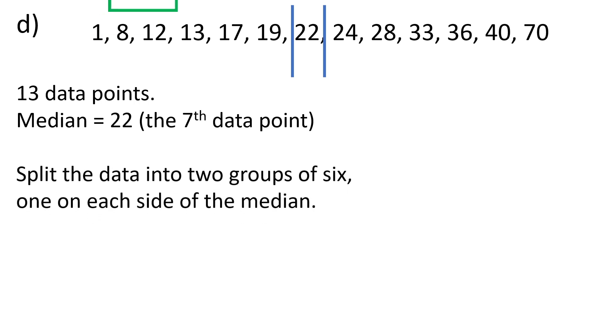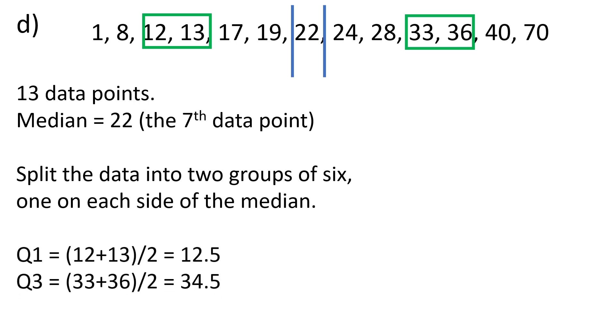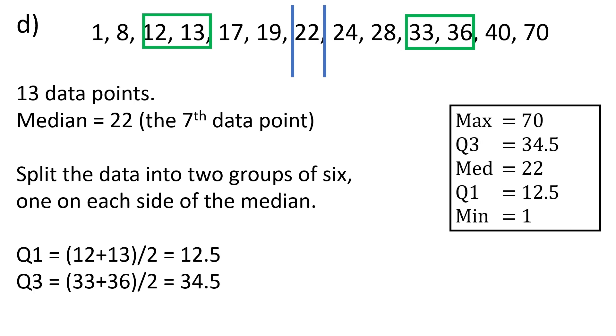Split the data into two groups of six. The median of the lower half is the average of the middle two, and the median of the upper half is the average of the middle two data points. That gives us our Q1, Q3, and our five number summary.